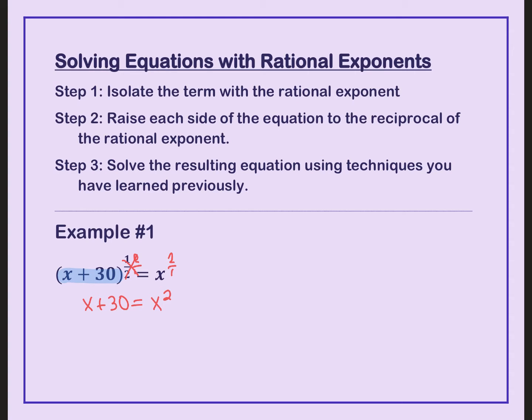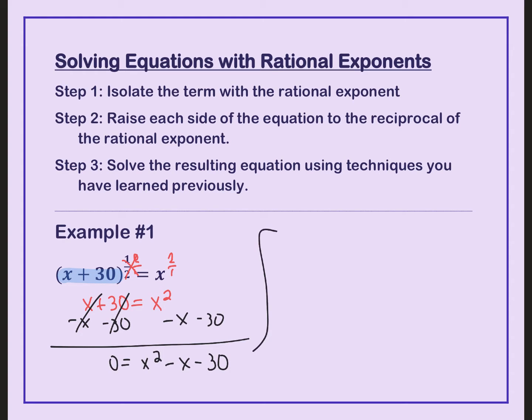I'm going to move everything to one side and see if it's factorable. I'm going to move it by subtracting x and subtracting 30. So now that I have my quadratic, I'm going to factor it. Since a is 1, I need to look for two numbers that multiply to negative 30 but add to negative 1.